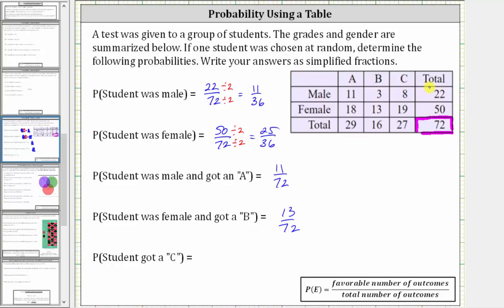For the last probability, we have the probability the student got a C. Notice here, the student can be male or female. Going back to the table one last time, we have the Cs in this column. The total number of Cs is 27. Therefore if one student is chosen at random, the probability the student got a C would be 27 divided by 72, or 27/72.